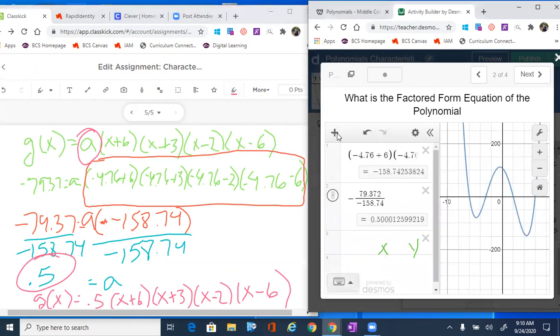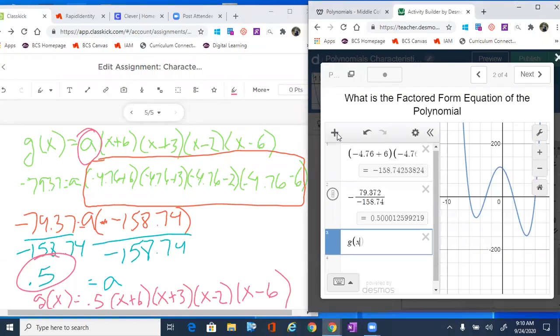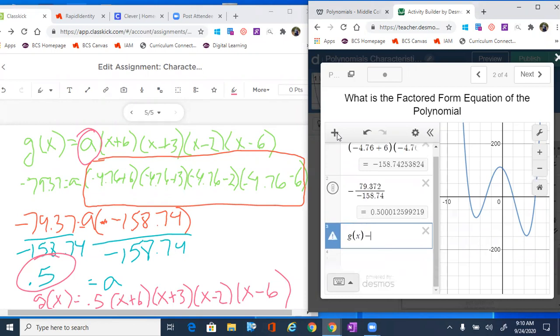Now I've got that factored form equation written down. I'm going to come over to Desmos and check my work, because I ain't wasting my time with all this and not going to get it wrong. Let's type this in: g(x) equals 0.5, and then x plus six, x plus three, x minus two, and x minus six.